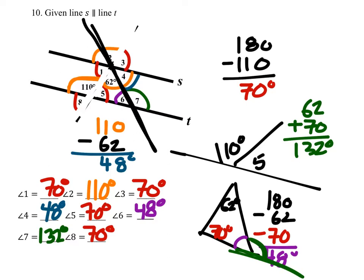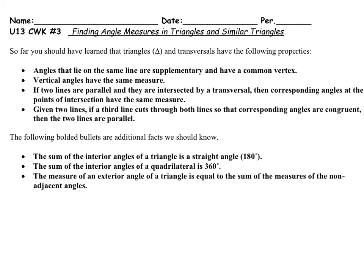Today we're going to be going over finding missing angles in triangles and with transversals — finding angle measures in triangles and similar triangles. This is nice because angles are the easy part.